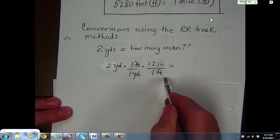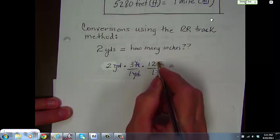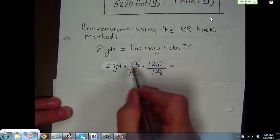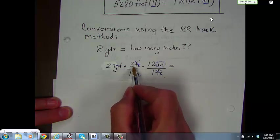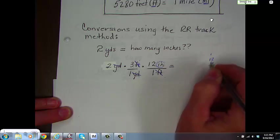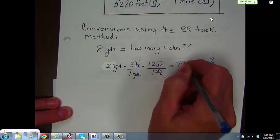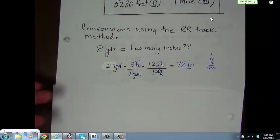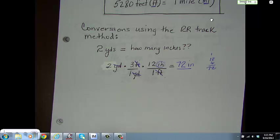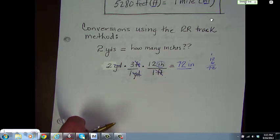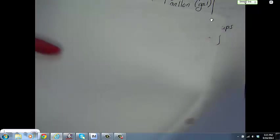If you have feet on the top here, you need to have feet on the bottom here. And, the ideal is to have the one that you were looking for be the only odd man out. It's the one that you can't reduce, can't cross out. So, you have 2 times 3, which is 6. And, 6 times 12 is 72. And, of course, the answer is 72 inches. Now, that's kind of a cool way to do it. I like that. I call it my railroad track method.